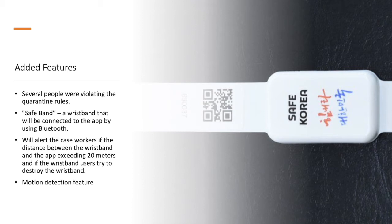The app was upgraded to support the SafeBand function by the Ministry of Interior and Safety. The wristband will be connected to the app by Bluetooth connection. An alert will be given if the distance between the wristband which is worn by the users and the phone is exceeding 20 meters, and if the users are trying to destroy the wristband. It also has added a motion detection feature to check whether there is no motion detected of the phone for a certain period.